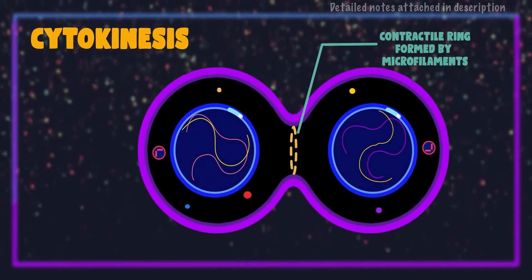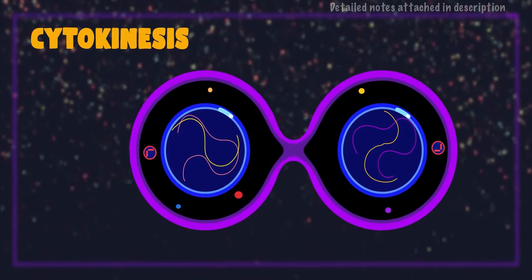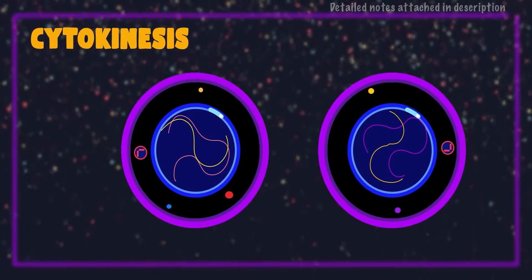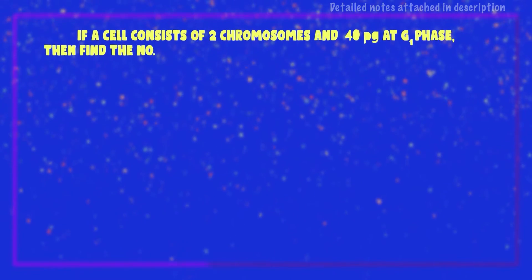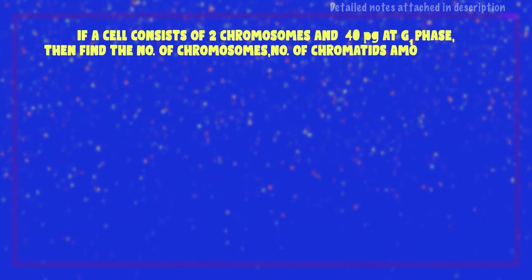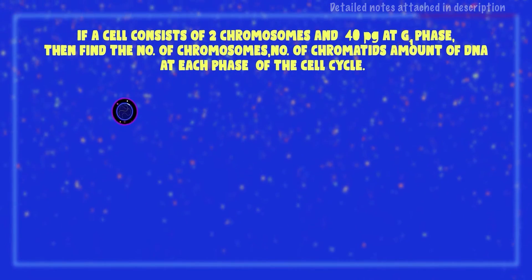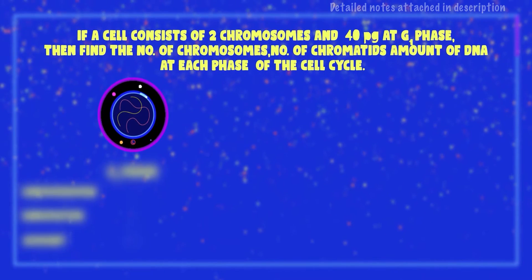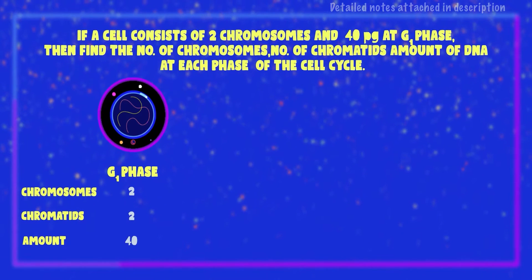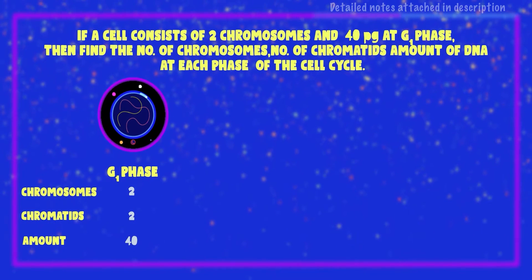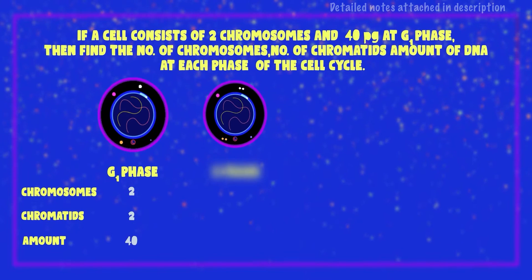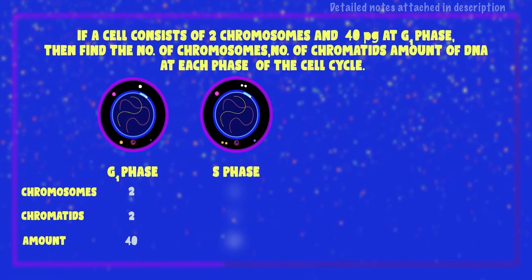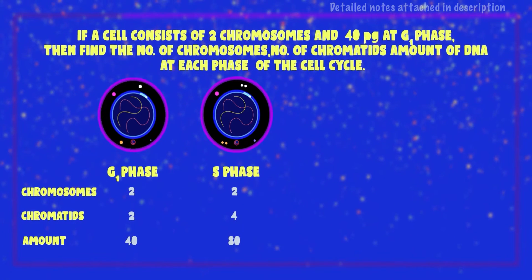The event that follows telophase is cytokinesis — the division of cytoplasm — which occurs by formation of a contractile ring of protein at the equator of the cell. As a result, the cell membrane constricts and finally two daughter cells are formed. Now let's discuss a question: if a diploid cell consists of two chromosomes in G1 stage and the amount of DNA is 40 picograms, find the number of chromosomes, number of chromatids, and amount of DNA at the end of each phase of the cell cycle. During G1 phase, the number of chromosomes remains 2, number of chromatids remains 2, and amount of DNA remains 40 picograms. But during S phase, as DNA replication occurs, the amount of DNA doubles, number of chromatids doubles, but the number of chromosomes remains the same — so chromosomes: 2, chromatids: 4, DNA: 80 picograms.